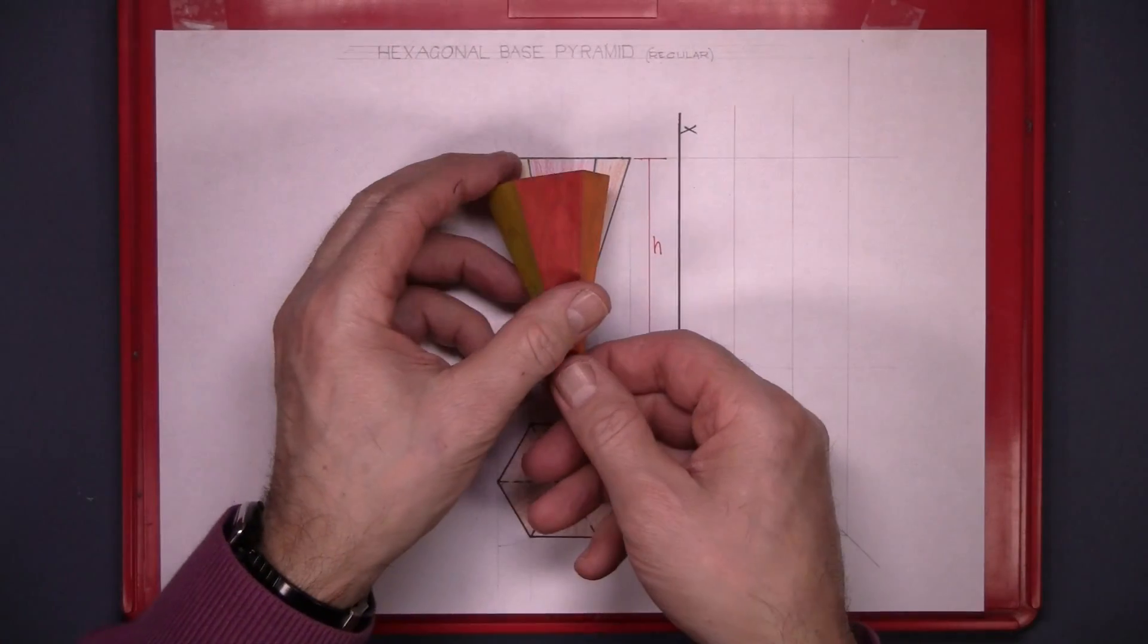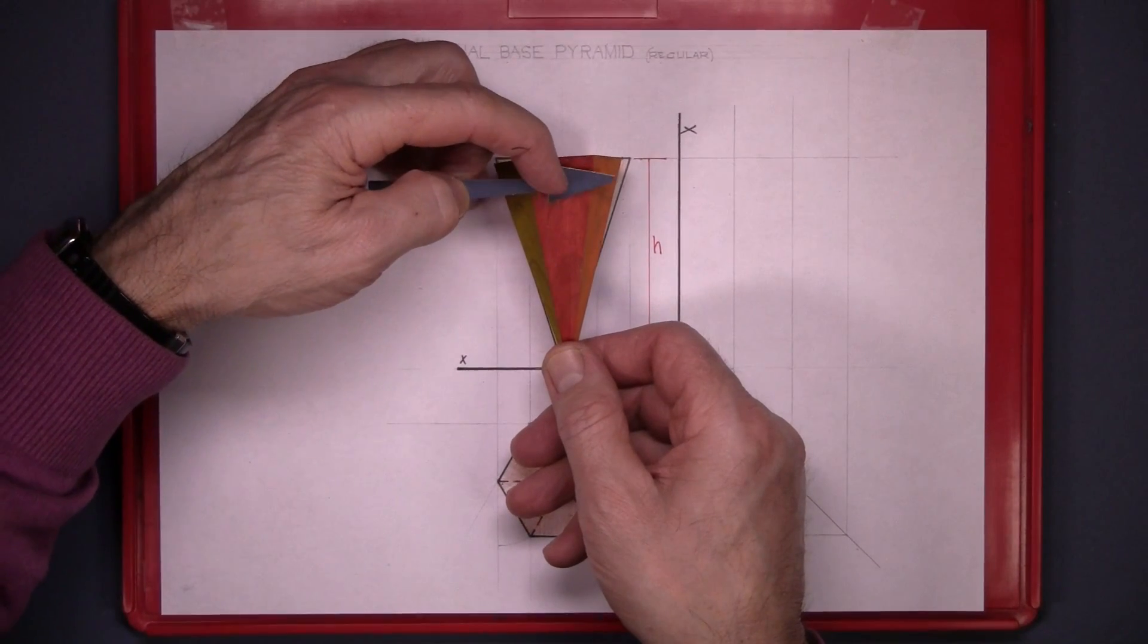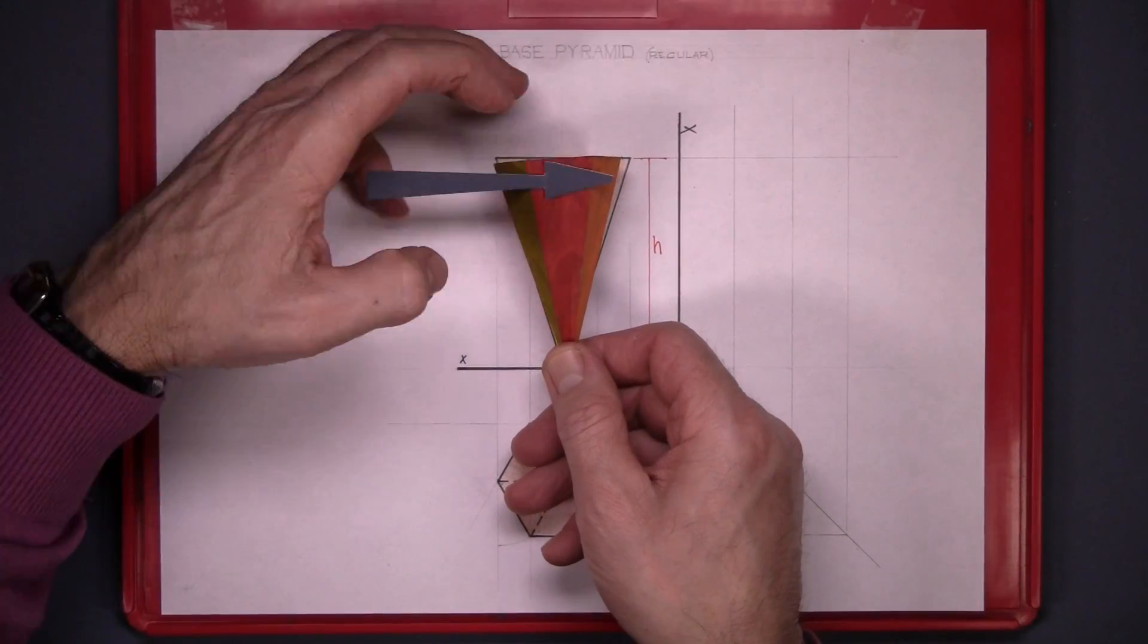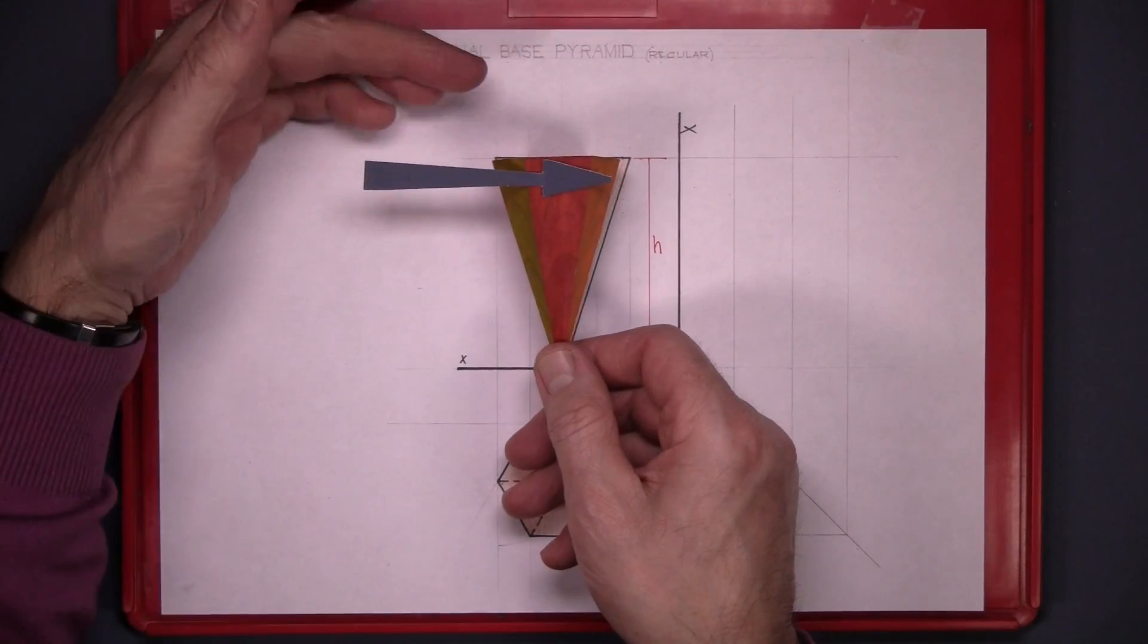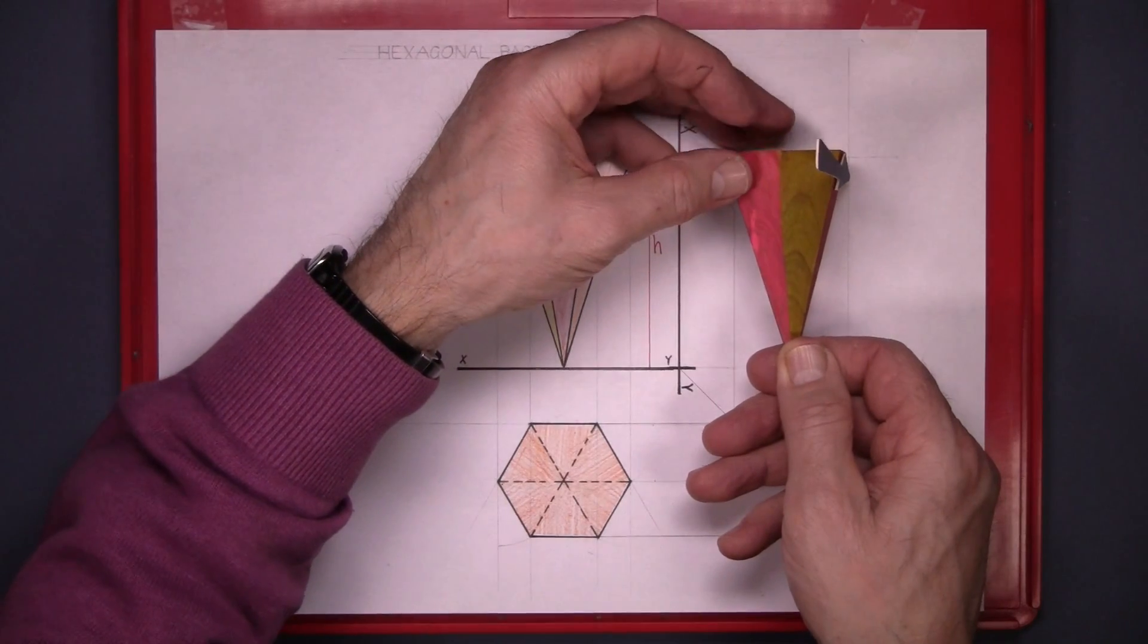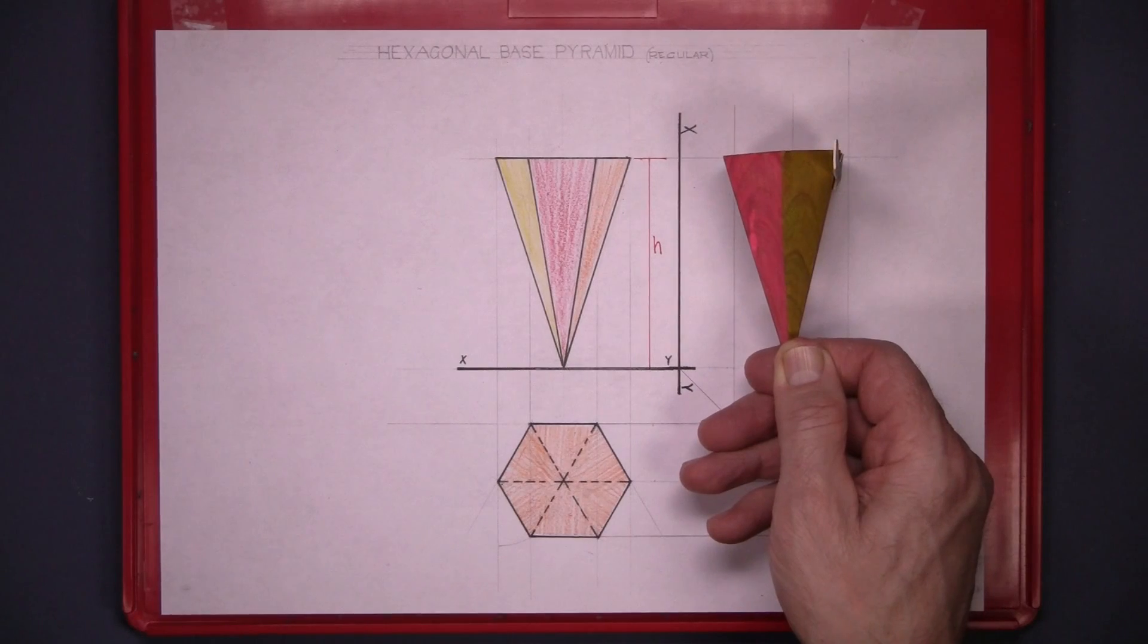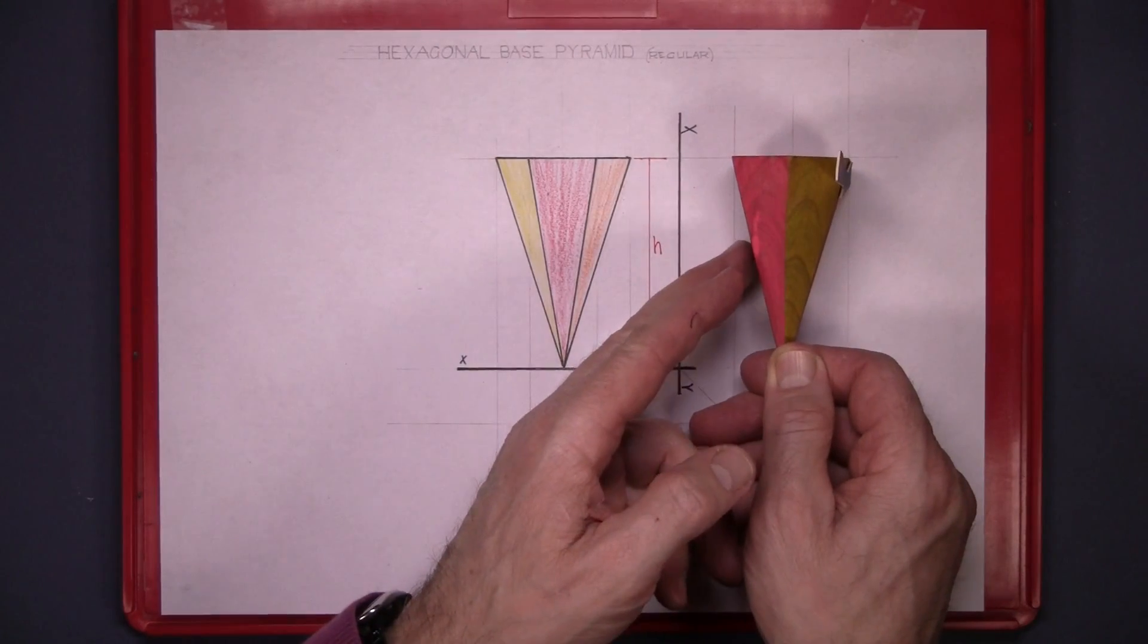Now this is the angle we're looking at, looking along that arrow. So when we turn it over and look directly down the arrow, that's what we're going to see there. We'll see two surfaces: the pink surface and the yellow surface.